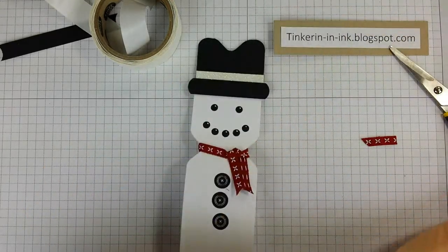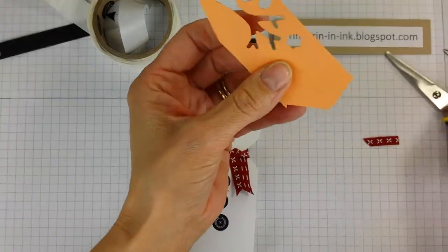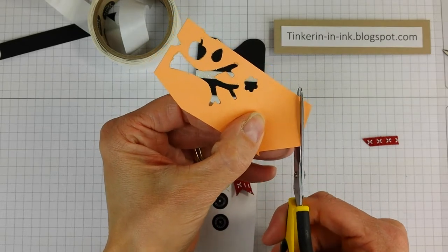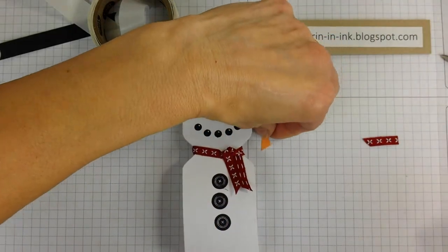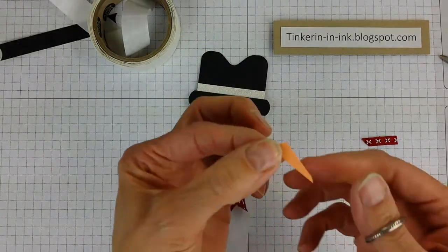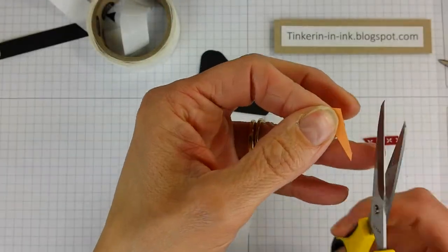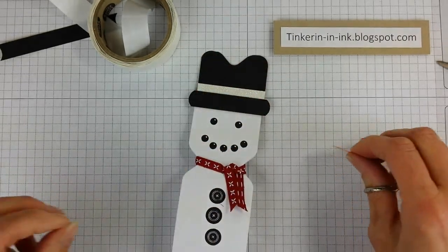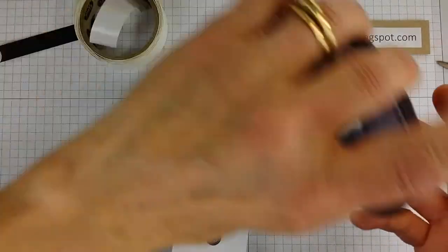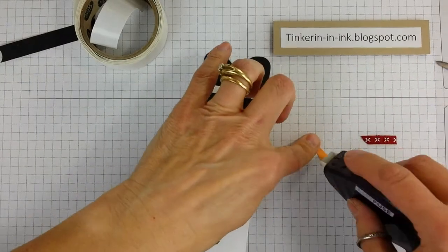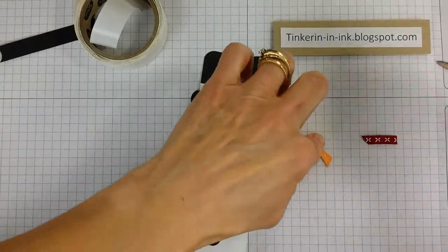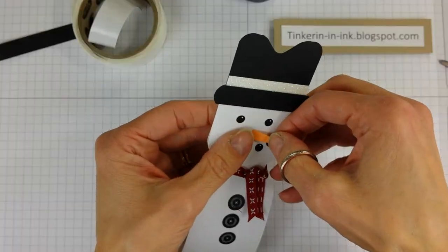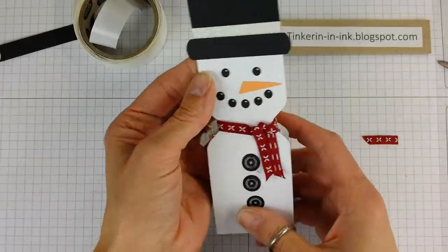And then just going to take some peekaboo peach and trim a triangular piece off for his nose. Nothing fancy there. Just literally trimming a triangular piece for his nose. And then I think we're going to use a little more fast fuse because that's what I have handy. You can use whatever you want.